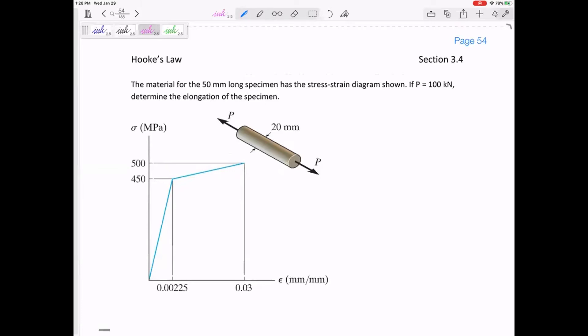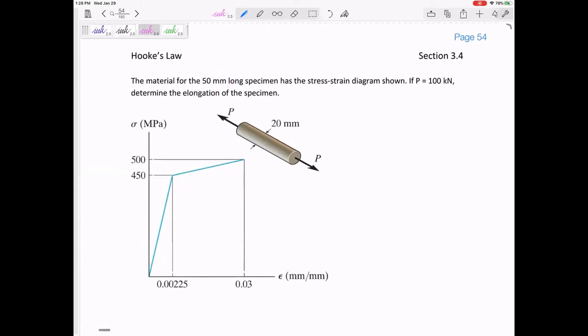So look at this one. We have a 50 millimeter long specimen. It has a stress-strain diagram shown. If P is 100 kilonewtons, determine the elongation of the specimen. So I'm given the P, giving me the force.